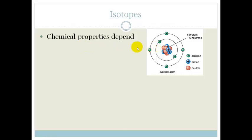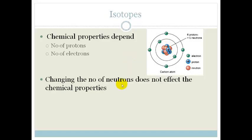The chemical properties of an atom depend on the number of protons and the number of electrons. That's it. The neutrons have nothing to do with the chemical properties. Changing the number of neutrons does not affect the chemical properties.